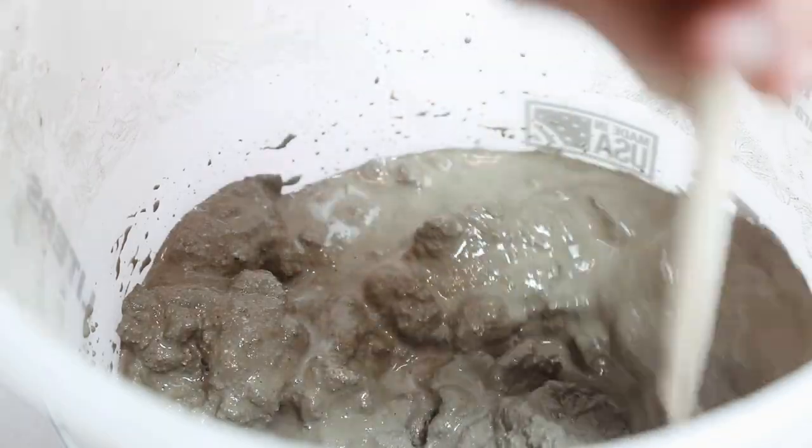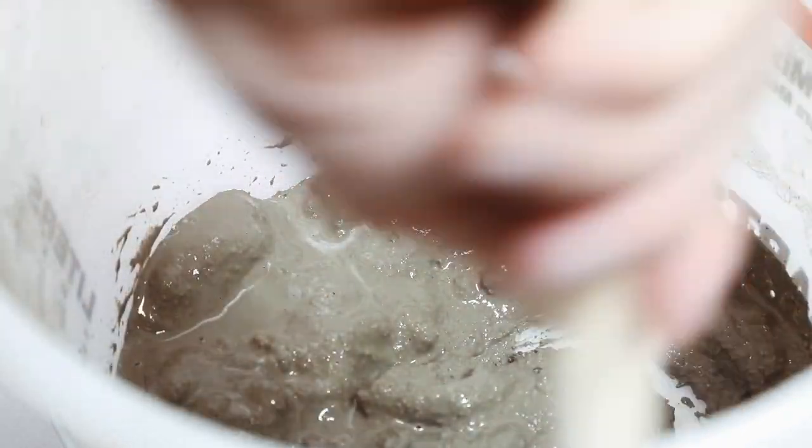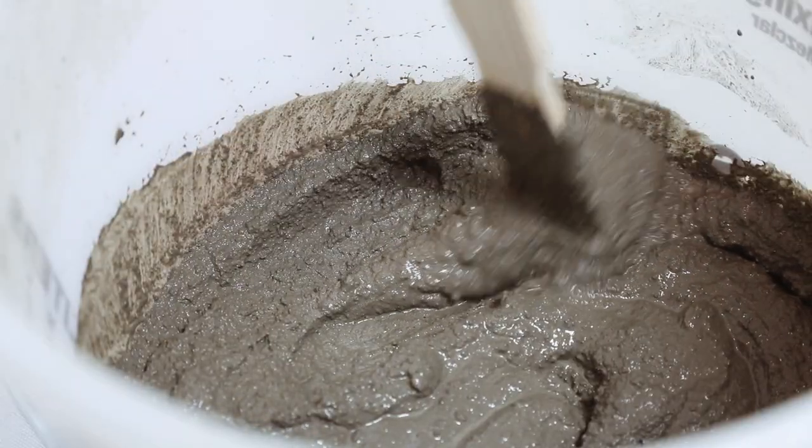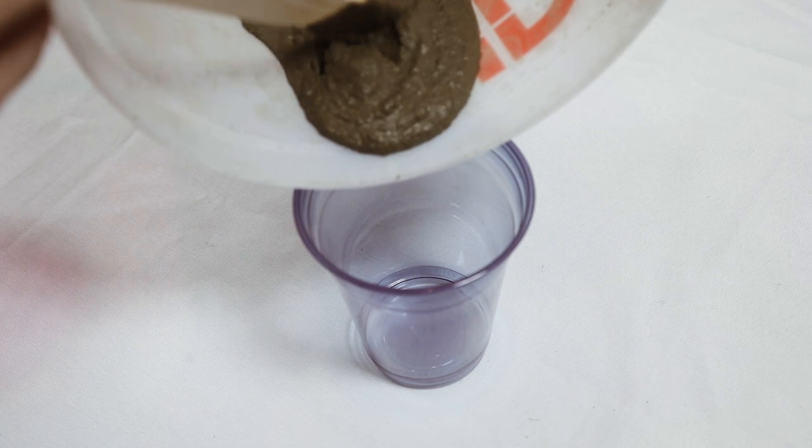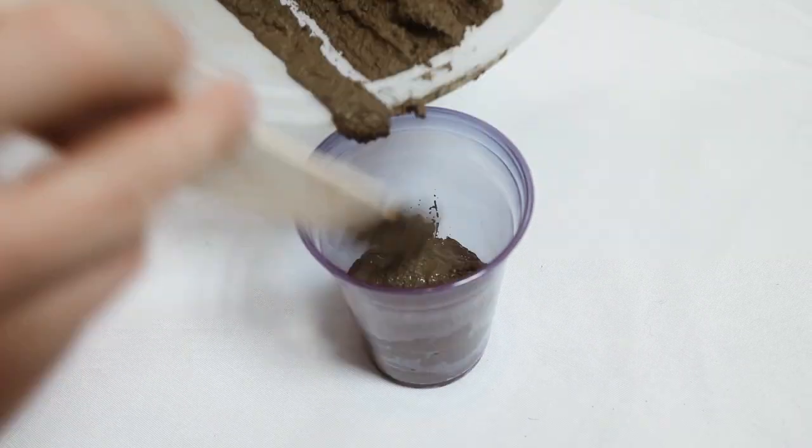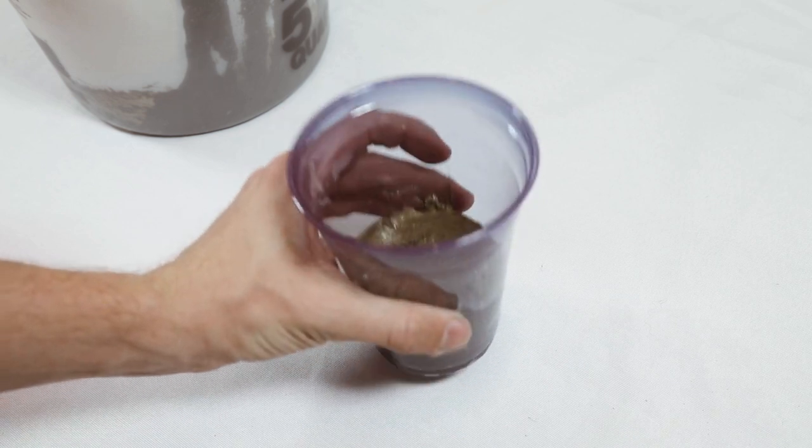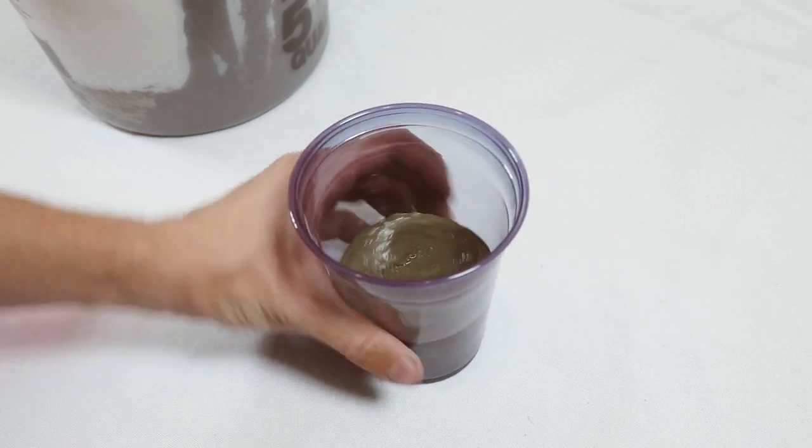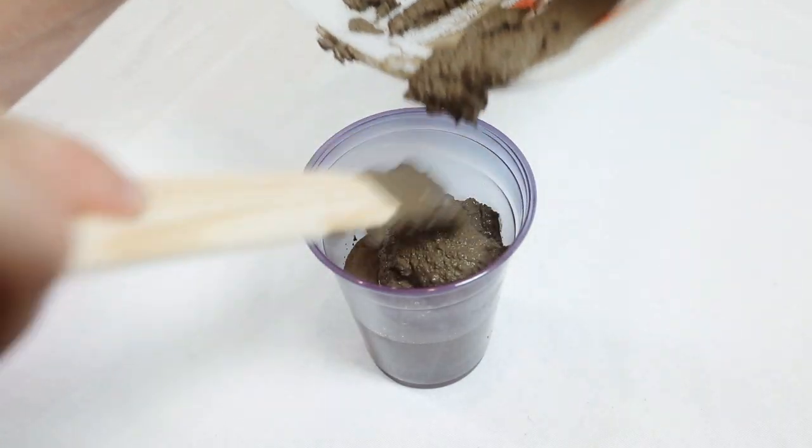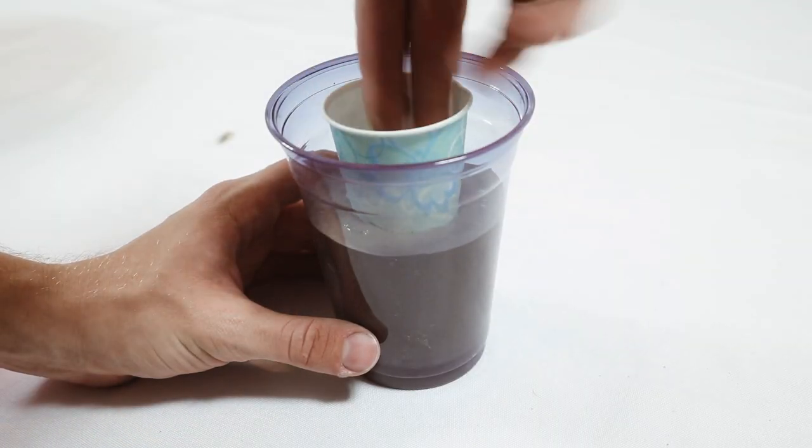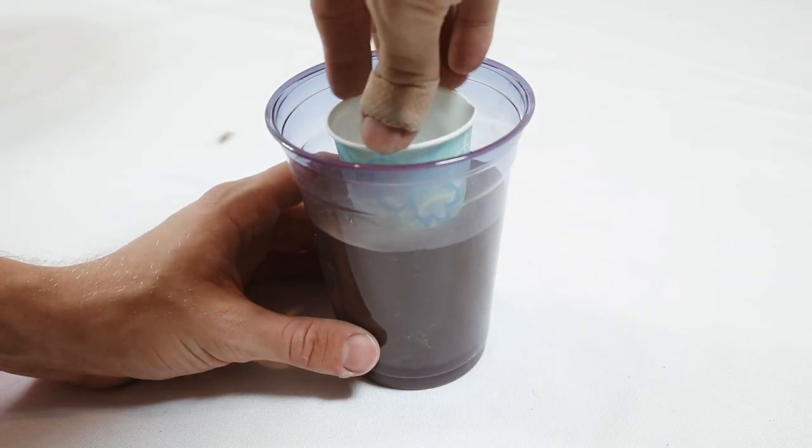So I mixed in water again and this is the most perfect consistency right here. This is what it needs to look like, a little bit more wet than dry. And then I poured it into my plastic cup, just a random plastic cup from Target. And I bopped it up and down on the table a little bit. We love bopping it because it actually gets out the air bubbles and makes it really smooth on the top.